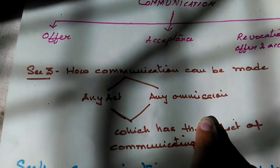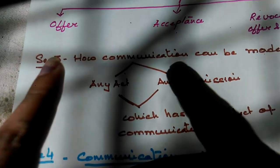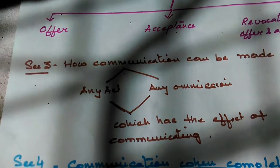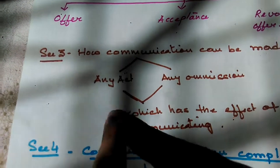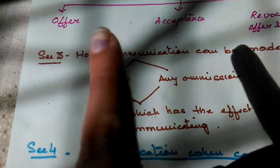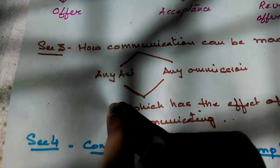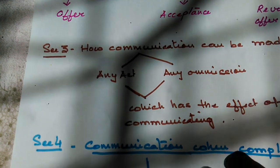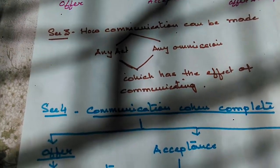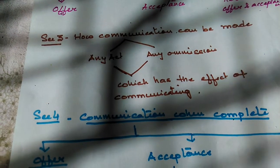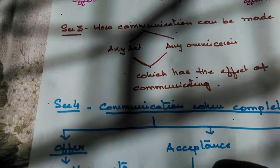Any act or any omission which has the effect of communicating the offer, acceptance, and revocation of offer and acceptance can be communicated. However, that act or omission should have the effect of communicating — if it is some random act, then it cannot be said to communicate the required thing that the person wanted to communicate.